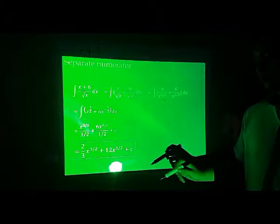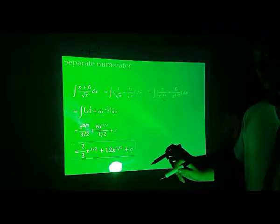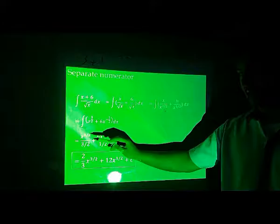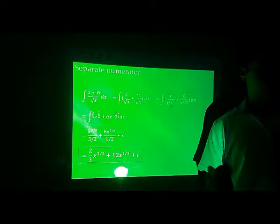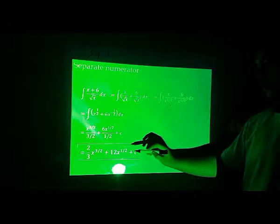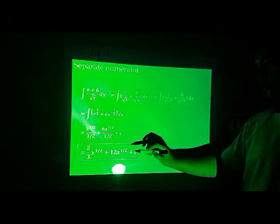Then, next is last. What happens here is we multiply the reciprocal of the denominator times the numerator. So this will happen: 2 over 3 x raised to 3 over 2 plus, the reciprocal of one half is 2 over 1 or simply 2. So 6x times 2 equals 12x, then raised to one half plus c. Any questions?